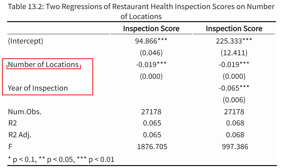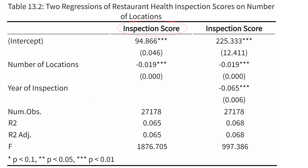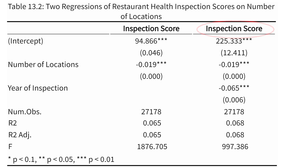I've got two different predictors here: the number of locations that that restaurant happens to have for chain restaurants, and also the year of inspection — the year in which the inspection took place. In that first model, I'm only using number of locations as a predictor because there's nothing in the year of inspection section. Over on the right, I am indeed including both of them as predictors.